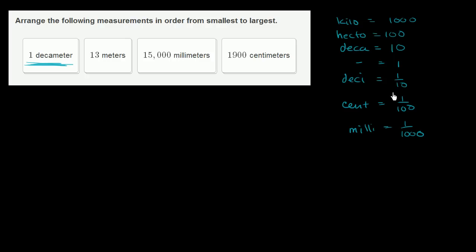Let's use this information to figure out how many meters each of these are. One decameter—we just saw deca means 10—that's 1 times 10 meters, so this equals 10 meters.